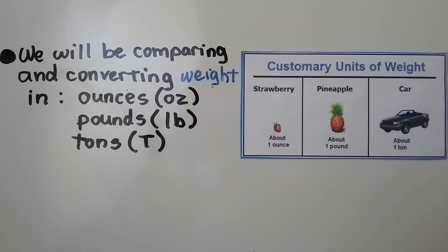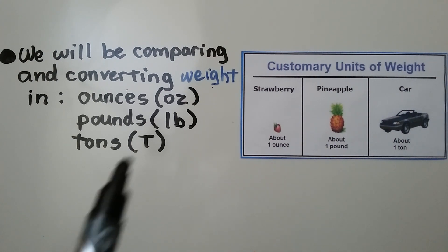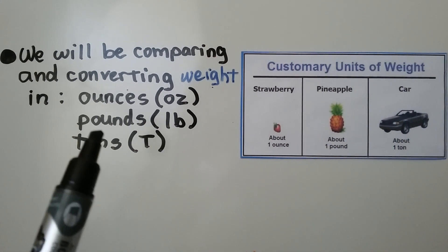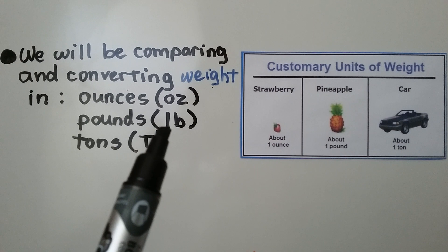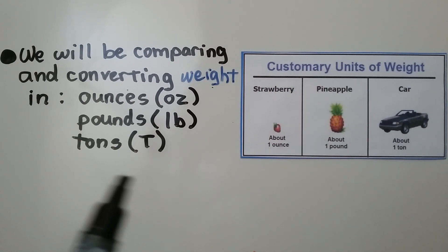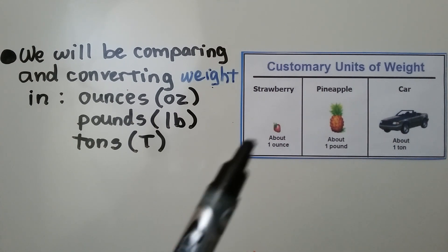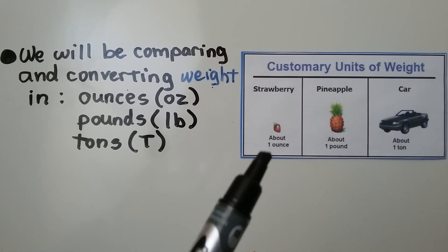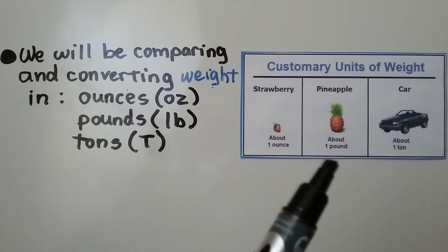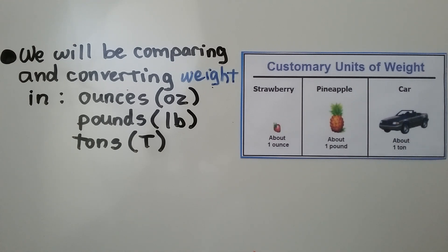We will be comparing and converting weight in ounces, abbreviated as oz; pounds, abbreviated as lb; and tons, abbreviated as a capital T. For real-world reference, a strawberry is about one ounce, a pineapple is about one pound, and a car is about one ton.